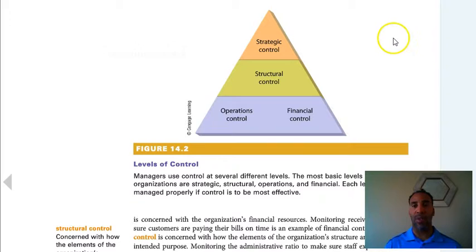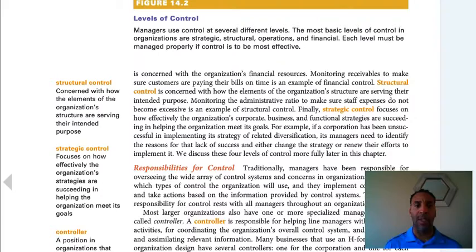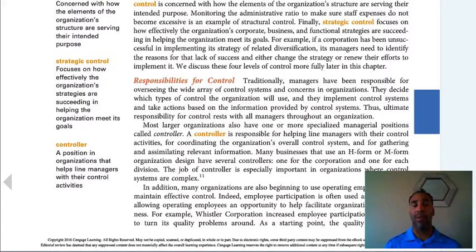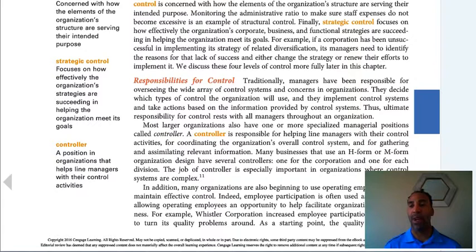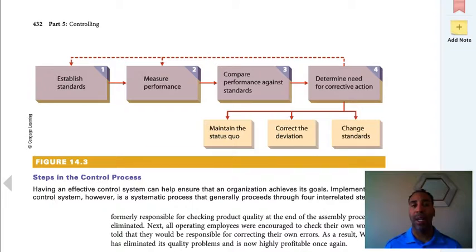Remember: go strategic, tactical, operational — that's how it flows. Structural control is concerned with how the elements of the organization's structure are serving their intended purposes. Strategic control focuses on how effectively the organization's strategies are succeeding in helping the organization meet its goals. The controller is a position in organizations that helps line managers with their control activities — sometimes this controller steps in to assist with the bigger picture.